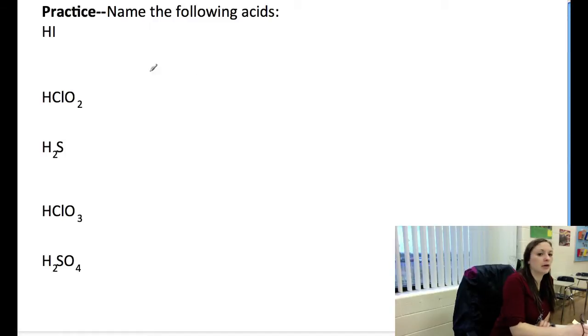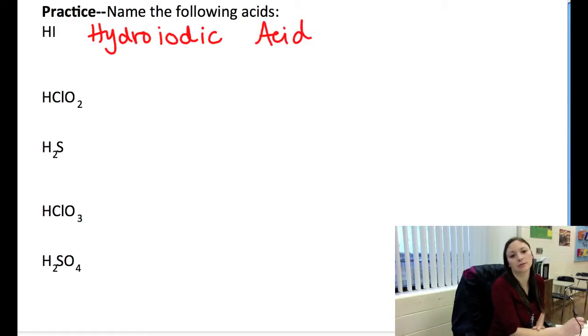So let's take a look at a few examples. I've got HI. So does this have oxygen? No. Not an oxyanion. It's a binary acid. There's H in general and one type of element, I. So I do hydro. The I is iodine, so we do the beginning or the root of iodine, which is iod. We add the -ic on the end, and we put acid. Hydroiodic acid, HI.